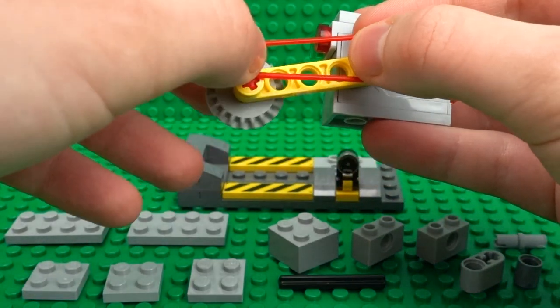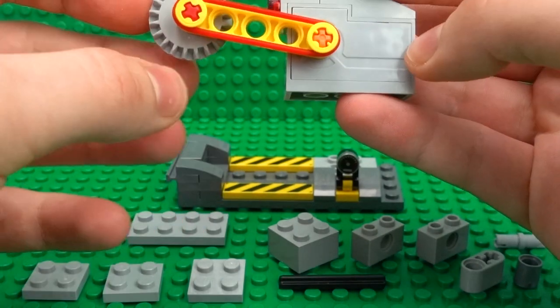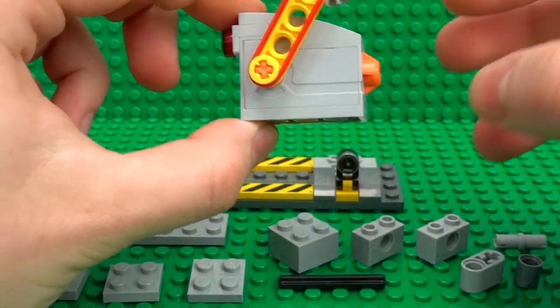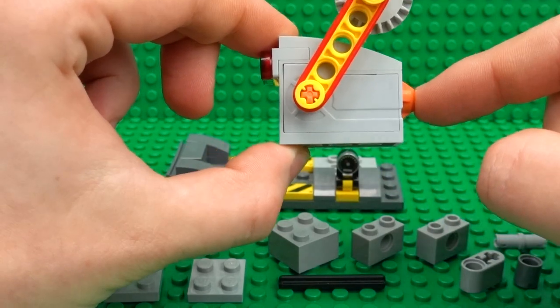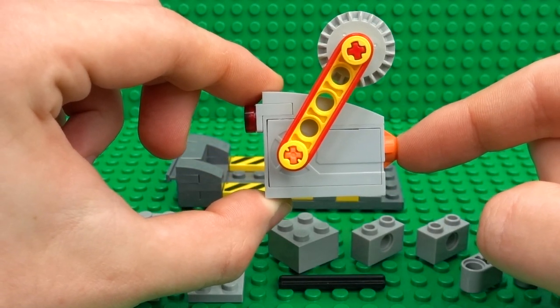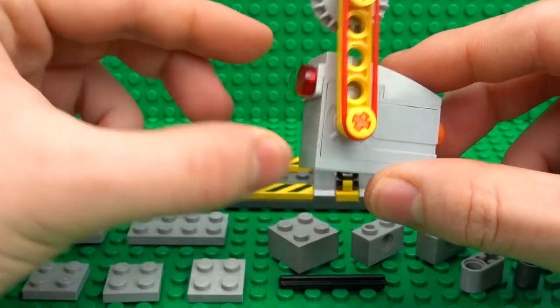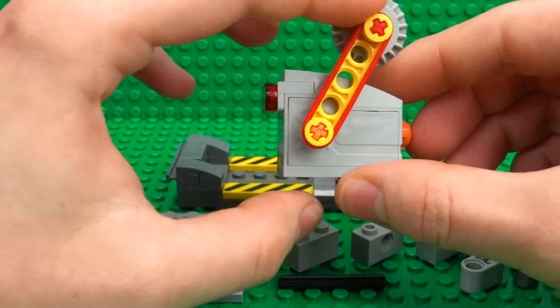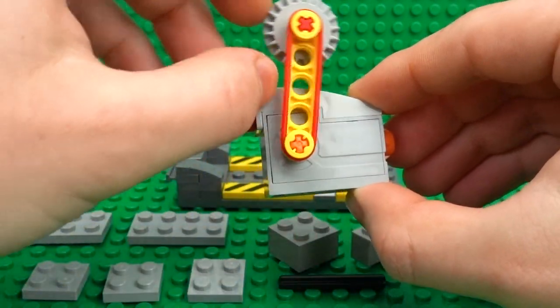So clip that over the edge and you'll see what's cool about this is if you're using the wind-up motor you can simply push the button on the end and that will activate the saw.